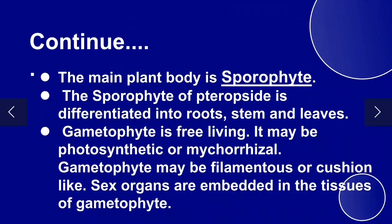The main plant body is the sporophyte. The sporophyte of Tracheophyta is differentiated into root, stem, and leaves. The gametophyte is free-living and may be photosynthetic or mycorrhizal. The gametophyte may be filamentous, and their sex organs are embedded in the tissues of the gametophyte.